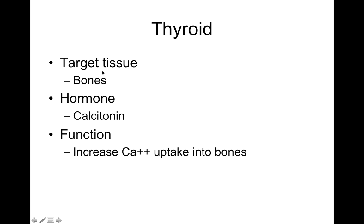Another hormone from the thyroid gland is calcitonin. Calcitonin targets bones and tells them to increase calcium uptake. If there's excess calcium in the blood, the thyroid releases calcitonin. The bones are really just a storage place for calcium. Calcitonin specifically inhibits osteoclasts — the cells that break down bone — and stimulates osteoblasts, the ones that build bone.